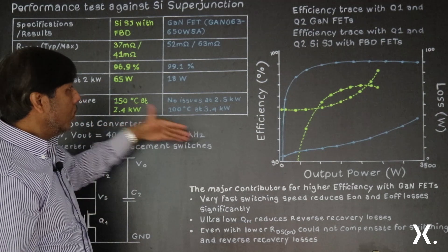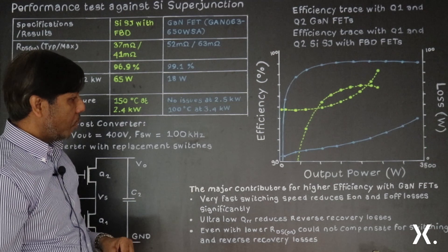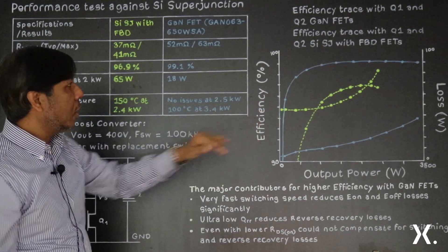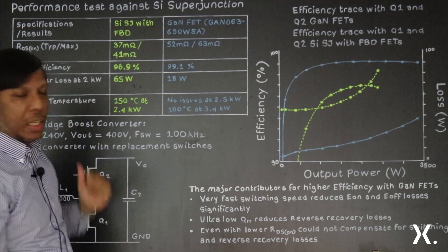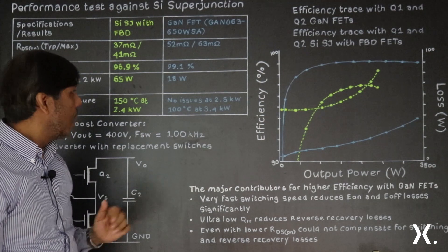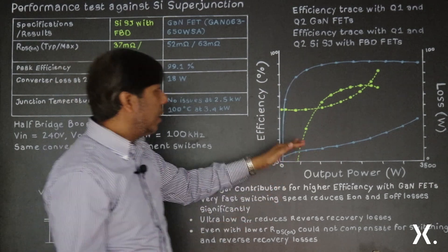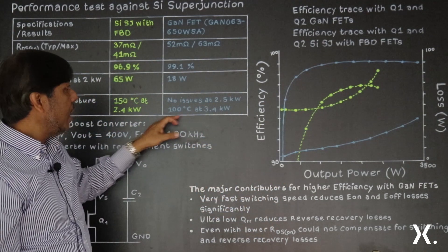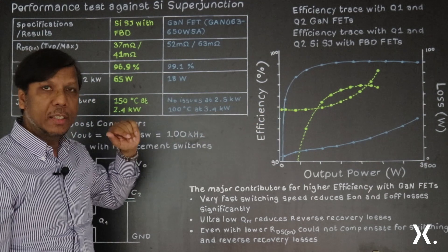And when we looked into the thermal behavior of this performance testing, we see that at 2.4 kilowatts, the silicon-based technology already reached 150 degrees temperature, so we had to stop it at that point. But on the other hand, the gallium nitride-based solution, even at 3.4 kilowatts, we only managed to reach 100 degrees centigrade.